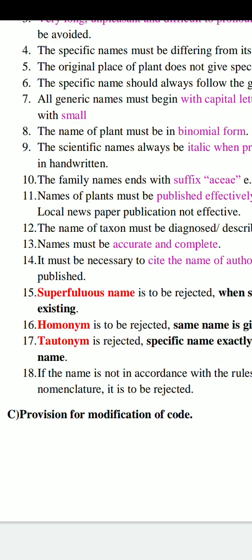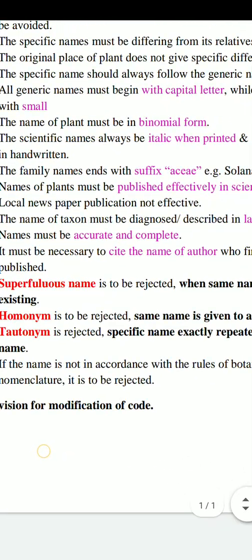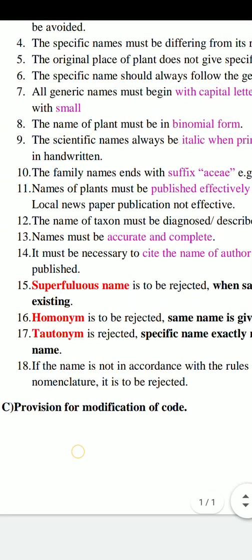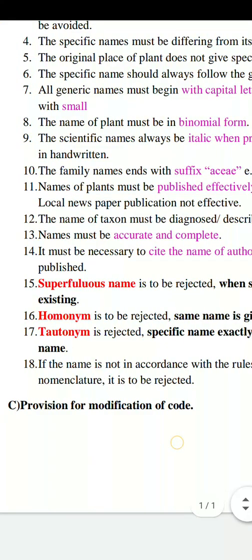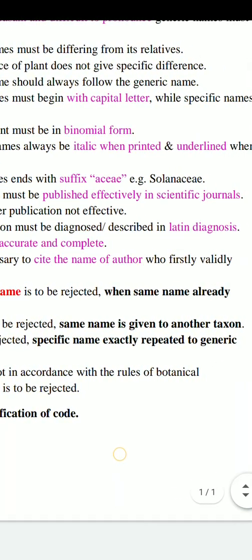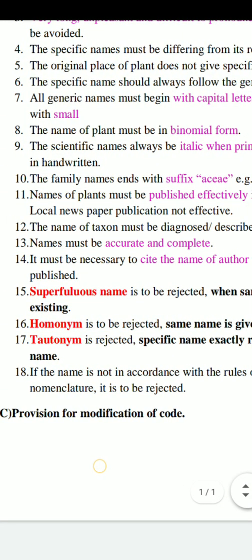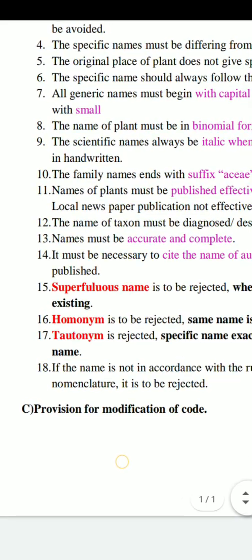Rules 15, 16, and 17 concern names that are generally rejected. Rule 15: Superfluous names — when the same name already exists, such naming is called superfluous and must be rejected. Rule 16: Homonyms — the same name given to another taxon is also rejected. Rule 17: Tautonyms — when the specific name exactly repeats the generic name, it is also rejected. Such tautonyms are used in zoological nomenclature but are completely rejected in botanical nomenclature.